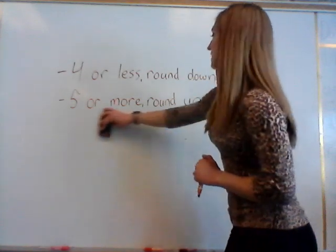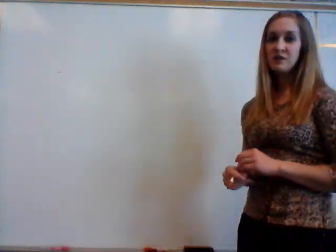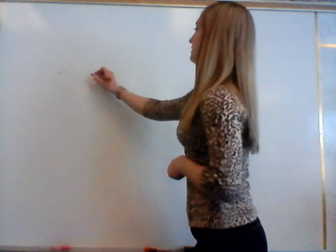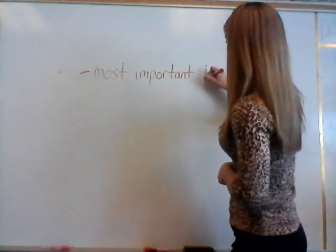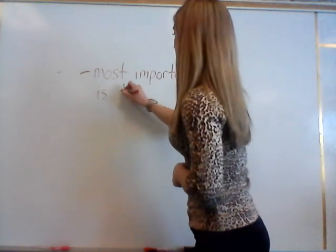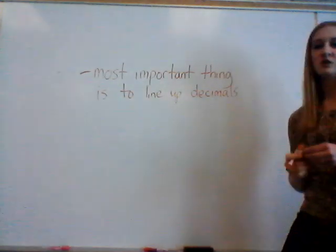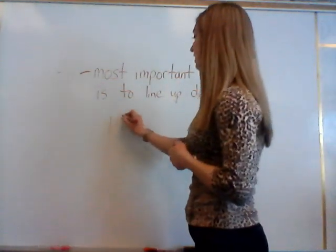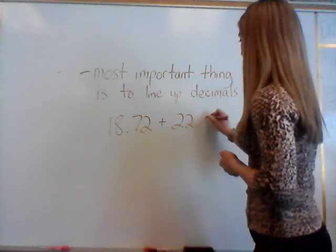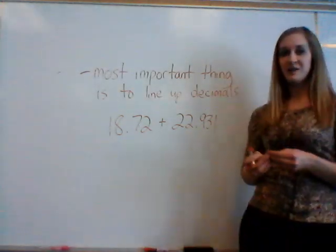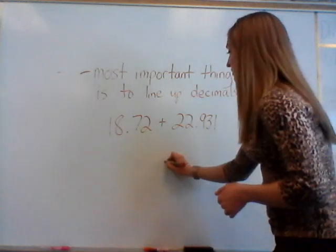The second thing I want to go over with decimals is adding and subtracting them. When adding and subtracting decimals, the most important thing is to make sure you line up the decimal. When we line up the decimals, that also means we are lining up the place values. So if I have 18 and 72 hundredths and 22 and 931 thousandths, when I'm rewriting it vertically, I put in my decimals first.